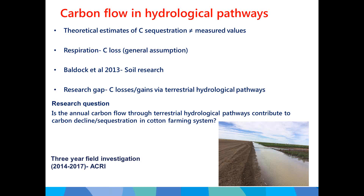A three-year field experiment was conducted from 2014 to 2017 to quantify carbon flow in terrestrial hydrological pathways. Theoretical estimates of soil organic carbon sequestration often don't coincide with measured values. While respiration losses are well-studied, there is little information on carbon gains through irrigation or losses through runoff and erosion. The research question asked: does annual carbon flow through terrestrial hydrological pathways contribute to carbon decline or sequestration in cotton farming systems?